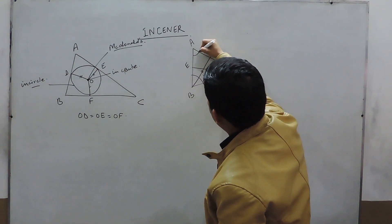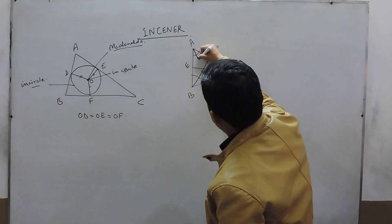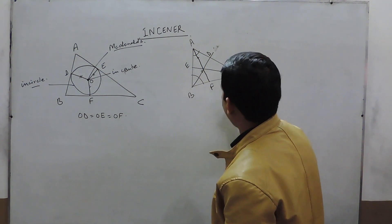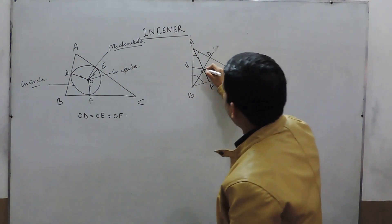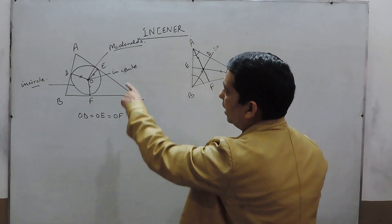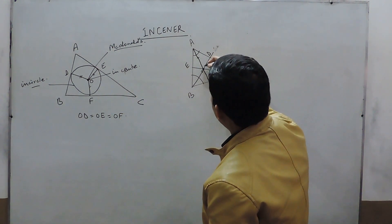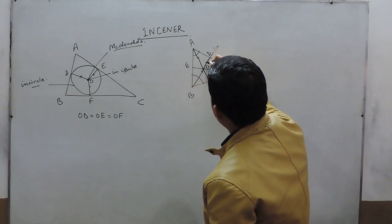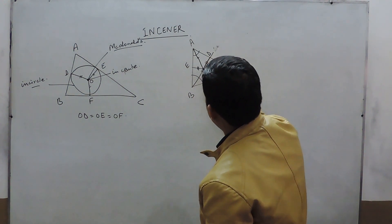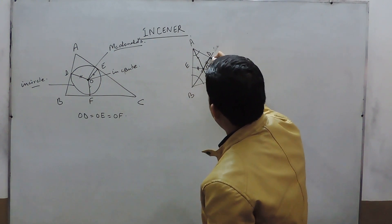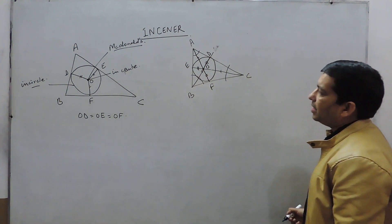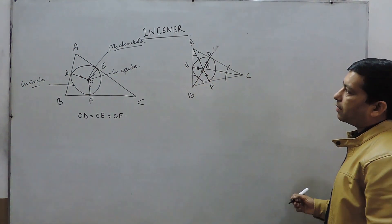Again, making an angle bisector which is touching the BC side at point F. Then this point is basically the InCenter of the triangle and this point is considered as O. So here OD equals OE equals OF, and this circle is known as the InCircle. This point is known as the InCenter.